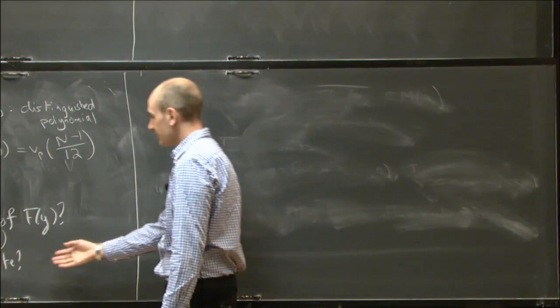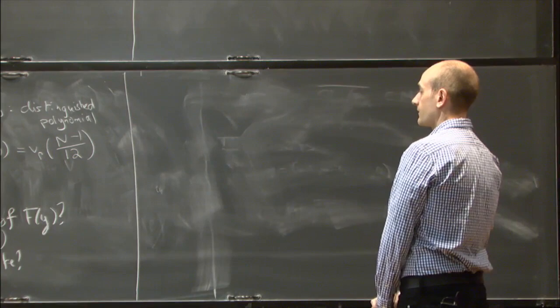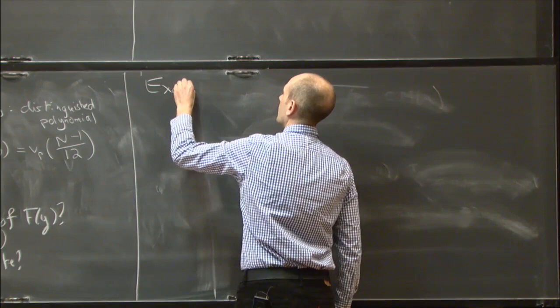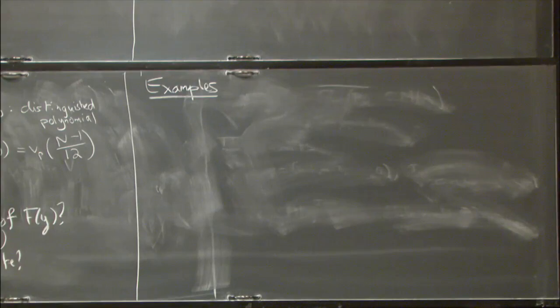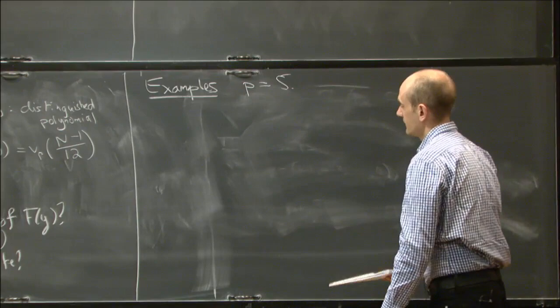Another question is what happens for N composite. We use the letter N for the prime in a suggestive way — maybe there should be a similar theory for when N is not prime, just a composite number. I'm going to address the first question and then make some comments about work in progress on the second question. I want to give some examples that can tell you what this Newton polygon is saying about modular forms.